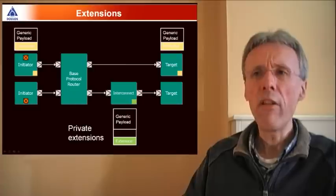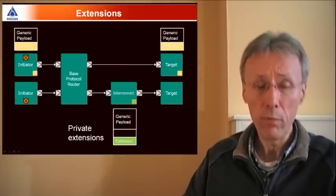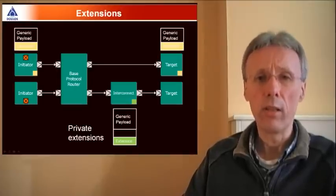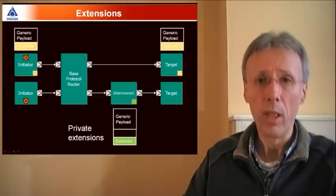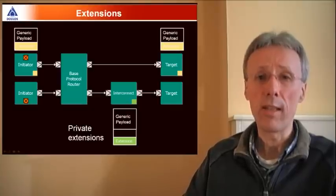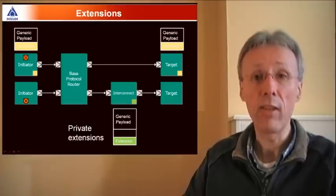So the generic payload extension mechanism is one of the key bits of machinery in TLM2. It has a number of advantages. Generic payload extensions can be routed through components that know nothing about them. So in the example shown here, the initiator and the target at the top can both understand an extension that's routed through a base protocol router that knows nothing about that extension.